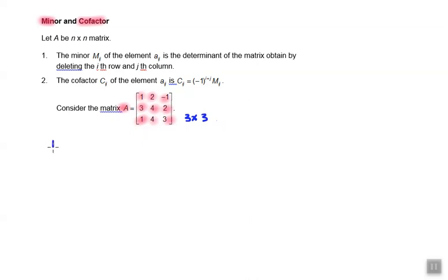Let's try to find its minor M11. How to find its minor M11? The first one here refers to the first row, and the second one here refers to the first column. First block first row and first column, and then find the determinant remaining.